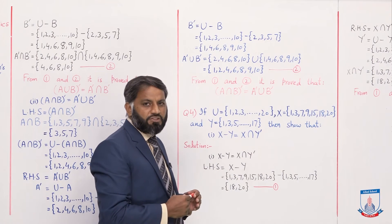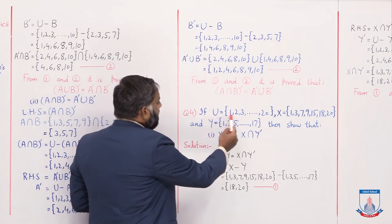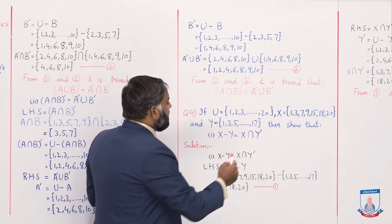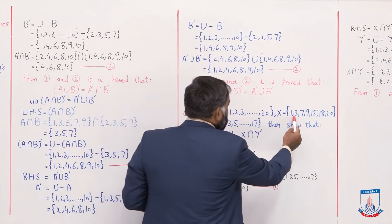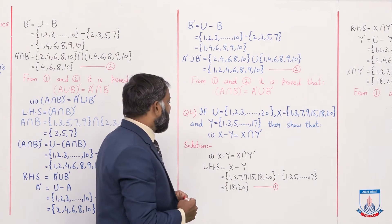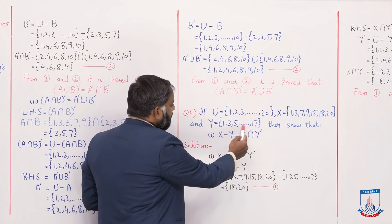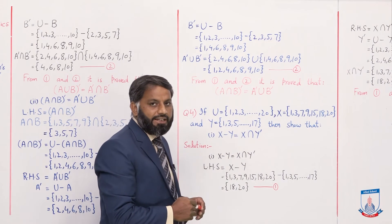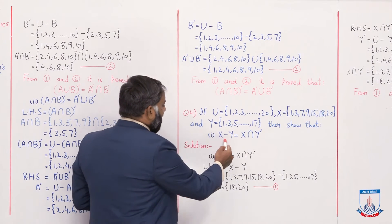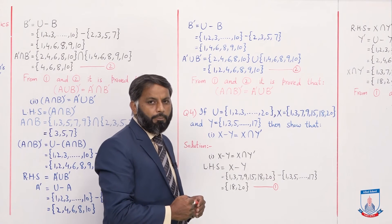Now we do question number 4 of the same exercise. If U = {1, 2, 3, ..., 20}, set X = {1, 3, 7, 9, 15, 18, 20}, and set Y = {1, 3, 5, 7, ..., 17}, then show that X minus Y = X∩Y'.